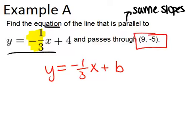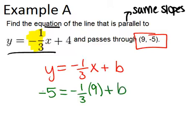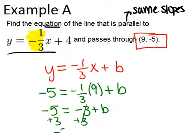We can use this given point of nine, negative five and substitute it for x and y in order to solve for b. So let's do that right now. y is negative five and x is nine. Let's evaluate this. Negative one-third times nine is negative three. So we have negative five equals negative three plus b. If I add three to both sides, I can figure out that negative two has to equal b.